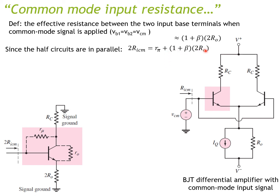Since RO is usually very large, and you multiply it by (1+β) — over 100 times — this term dominates completely. So you can estimate the common mode input resistance as approximately (1+β)·2RO, dropping the Rπ term.